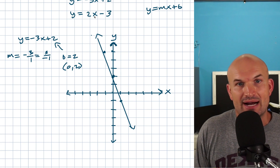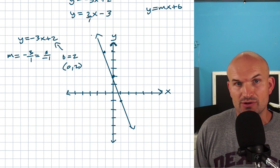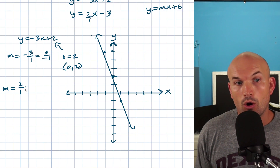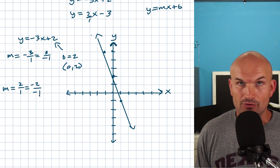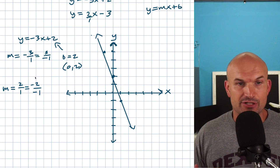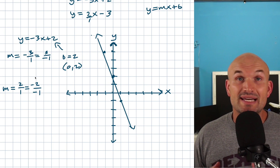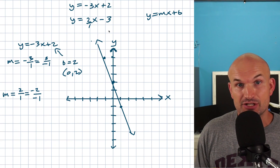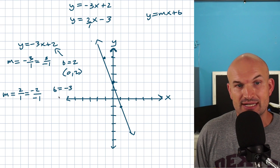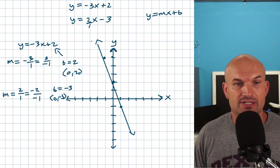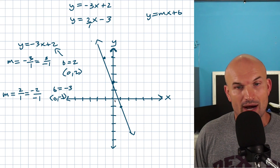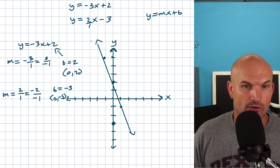Now we need to graph y equals 2x minus 3. This one does not have a negative slope, so I can rewrite the slope as 2 over 1 — or also as negative 2 over negative 1. My y-intercept here is negative 3, since we're subtracting 3, which I can write as the coordinate point (0, negative 3). Plot that y-intercept first: that's 0 along the x-axis and negative 3 along the y.